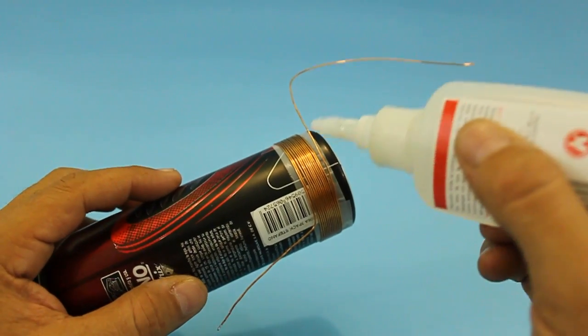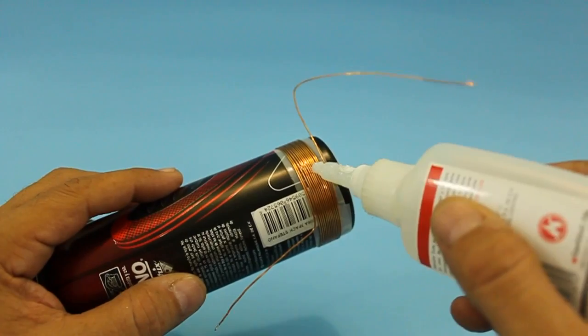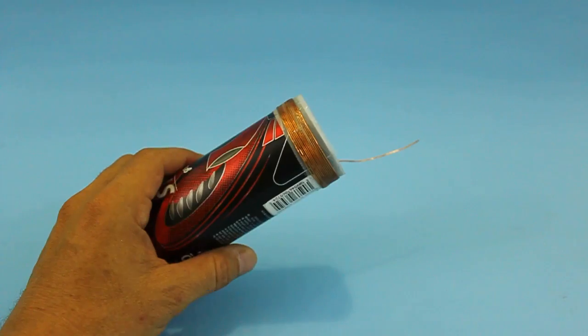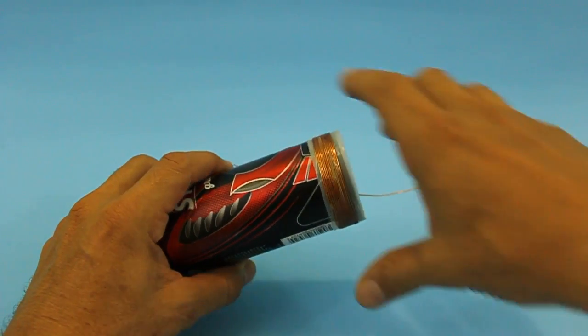It is convenient to apply instant glue or epoxy glue in order to give more rigidity to the coil. Now carefully take off the coil.